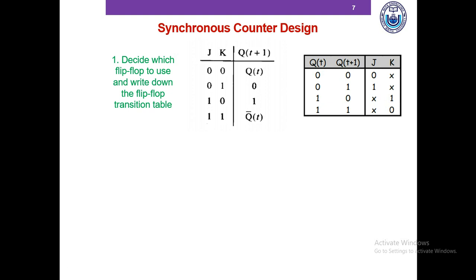In this manner, we complete the entire transition table by noting the transitions of the present state to next state output and figuring out what combinations of JK can cause each transition, and based on that we complete the transition table.